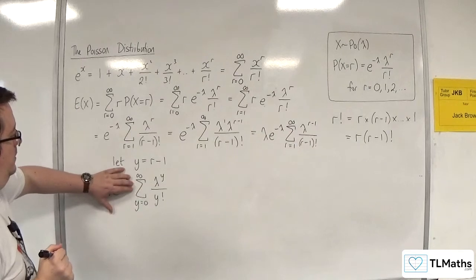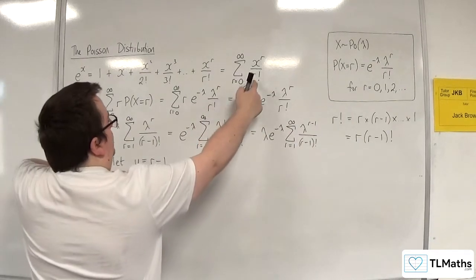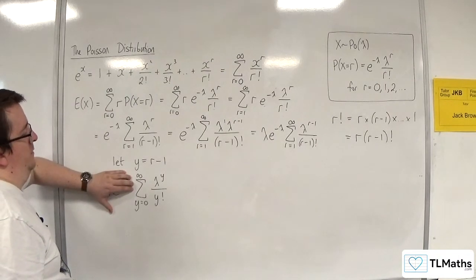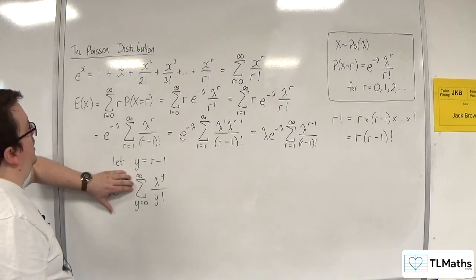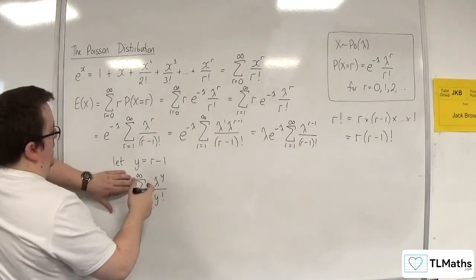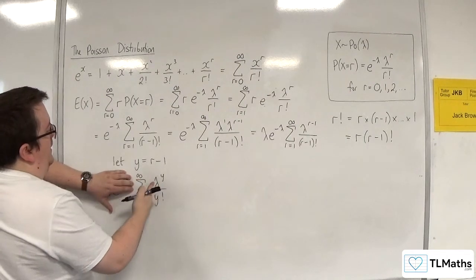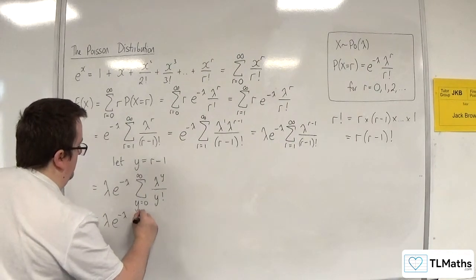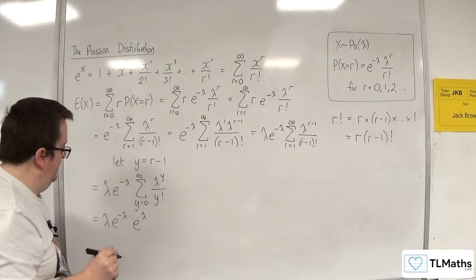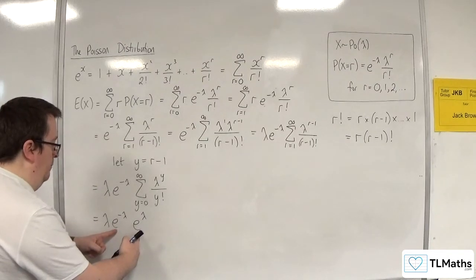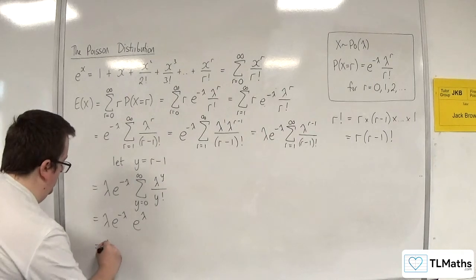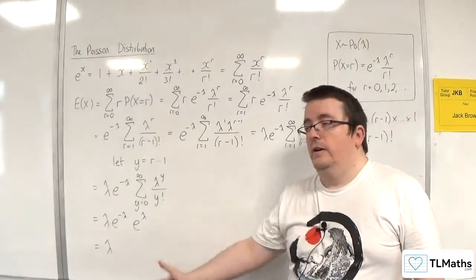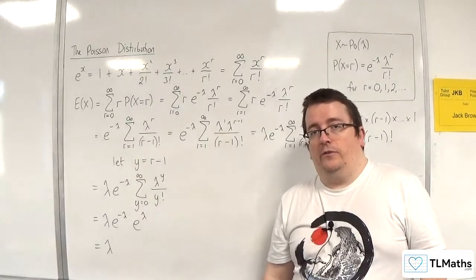This sum here is exactly what we had up above — it's just with the letters changed. So this is the same as e to the lambda. Here we have lambda times e to the minus lambda times e to the lambda, and those exponentials multiply to make 1. So we just get lambda, and that is how we can prove that lambda equals E(x) for the Poisson distribution.